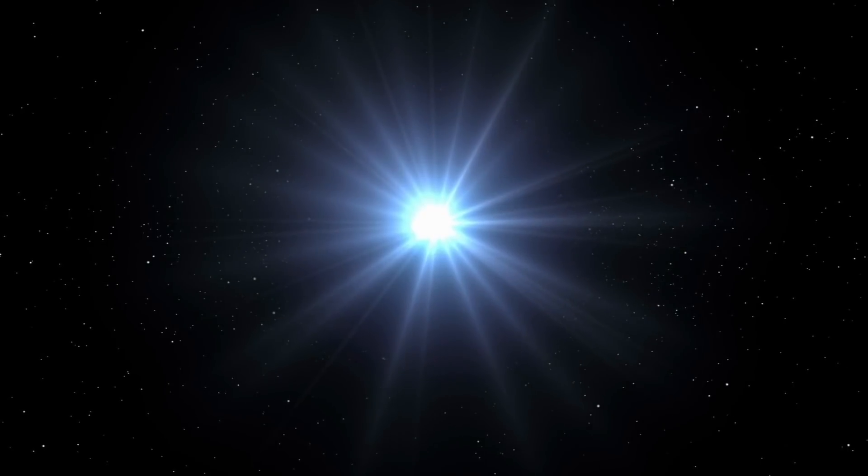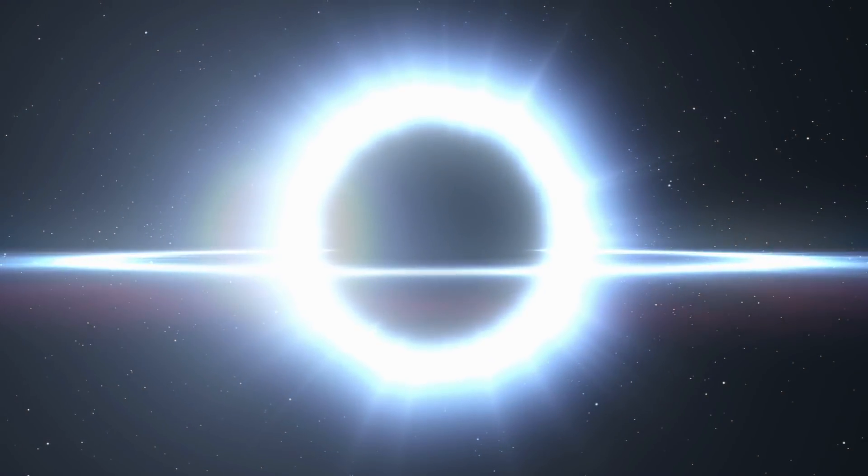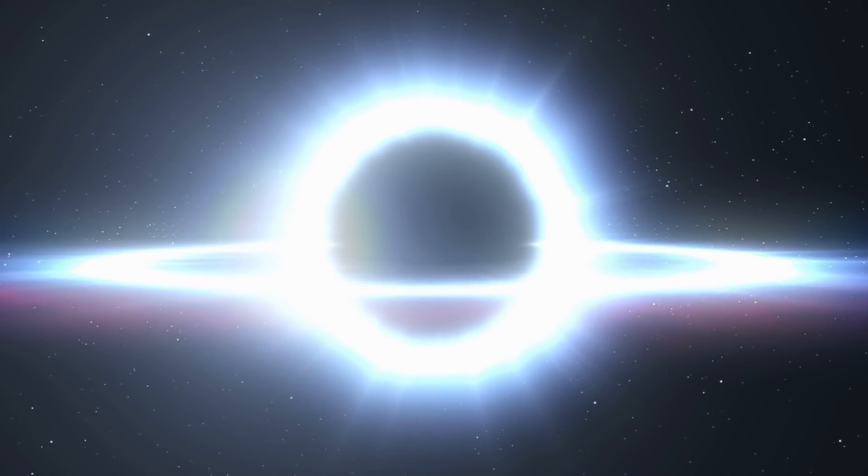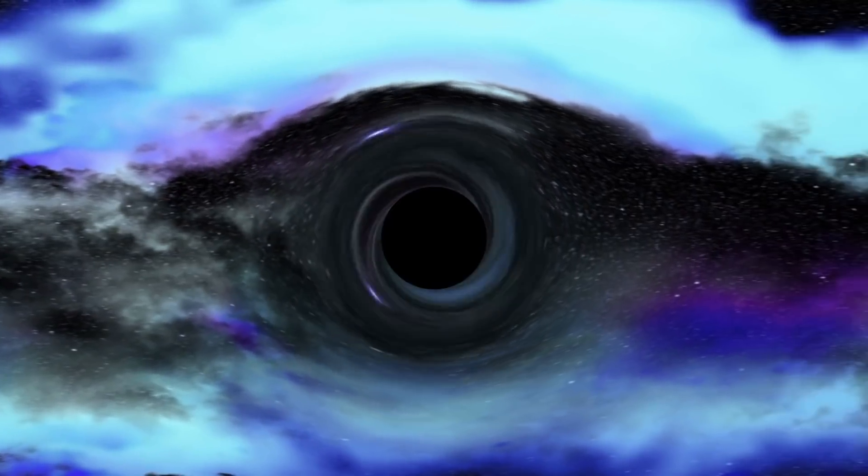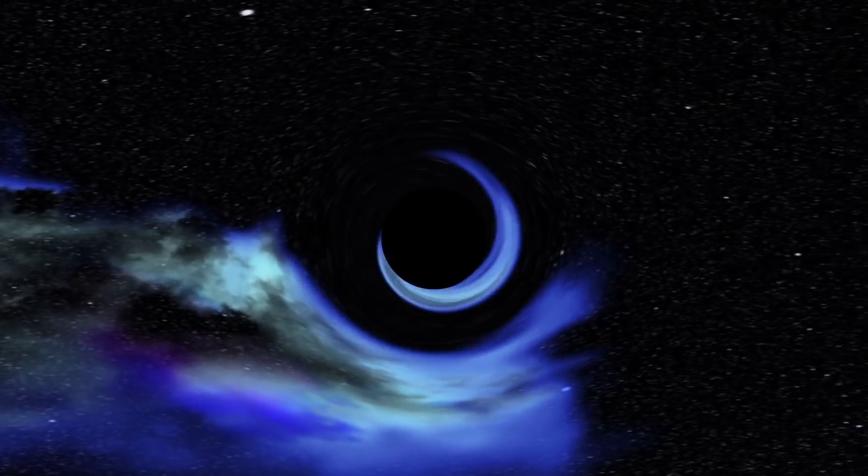The gargantuan ULAS black hole first came into creation a mere 690 million years after the Big Bang, a very short time in the relative time of the universe. The discovery of such a massive celestial body may teach us more about black holes and their massive sizes. This may shine a light on how the conditions of the early universe changed to what they currently are today.